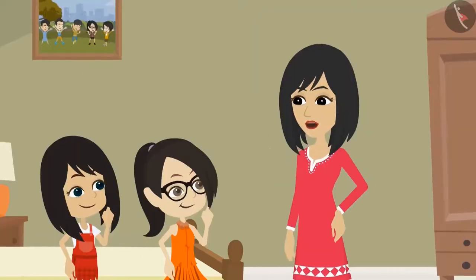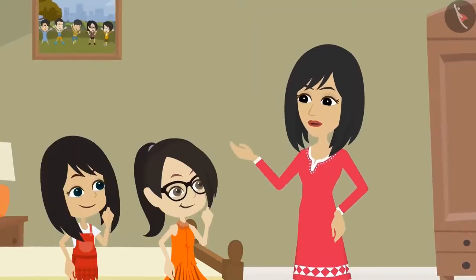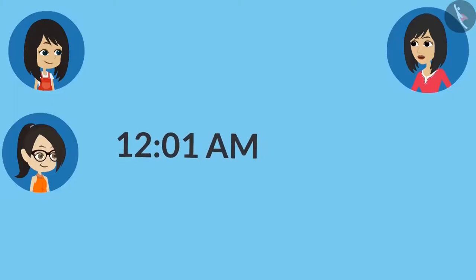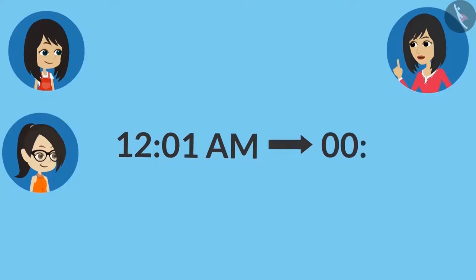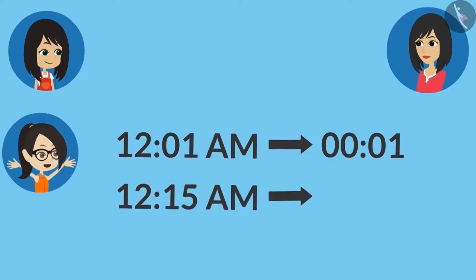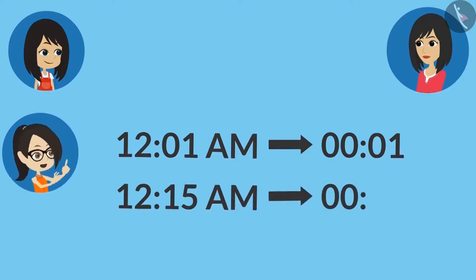No. After 12 o'clock at night, time starts from 0. So if you want to write 1 minute past 12 o'clock, it will be written as 00:01. That means 15 minutes past 12 o'clock at night will be written as 00:15 in the 24-hour format.